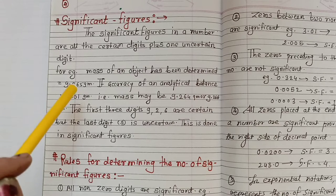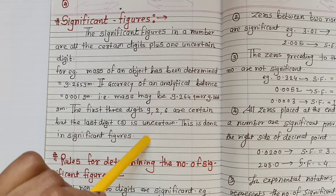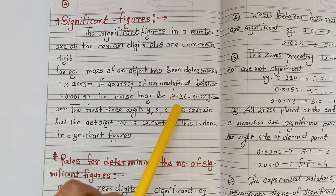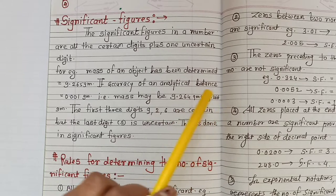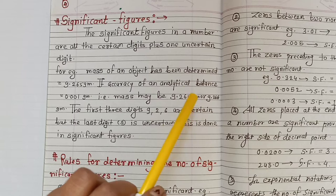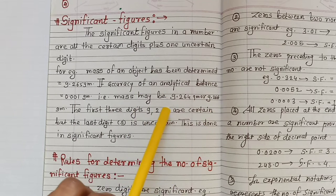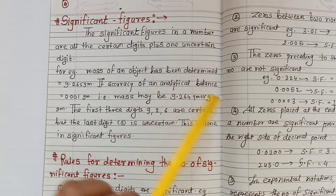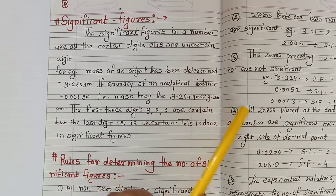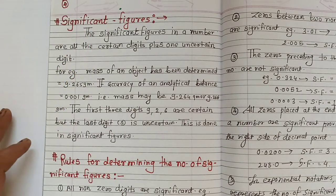These are all certain digits. Only the last digit is uncertain, and this is what significant figures are all about. In significant figures, all the certain digits are included — a number mostly has all certain digits together with one uncertain digit. So from this example, there is one object, its mass is given, and the analytical balance accuracy is also given. So the first 9.26 are all certain and the last digit — which can be 5, 4, or 6 — is uncertain. These all things come under significant figures.